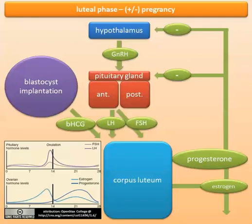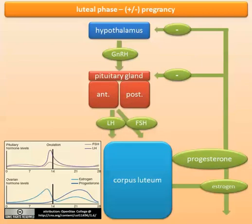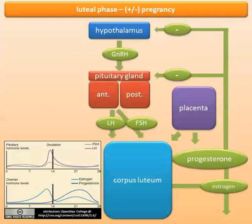This occurs for the first eight to ten weeks under the influence of primarily the corpus luteum, and then the placenta takes over those functions. The placenta starts making beta-HCG and progesterone after eight weeks, and by the end of the first trimester the placenta is taking over those functions. The endocrinologic properties of the placenta are important to know: beta-HCG production peaks around week eight and slowly decreases, and the placenta also makes progesterone.